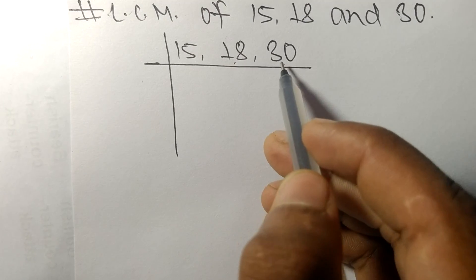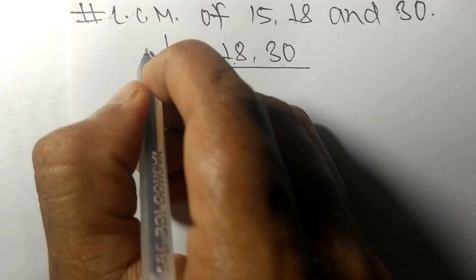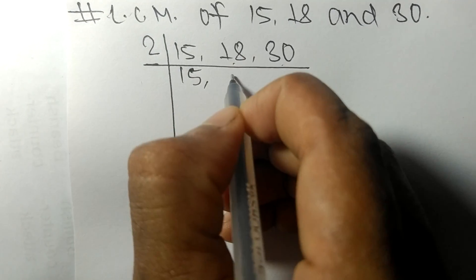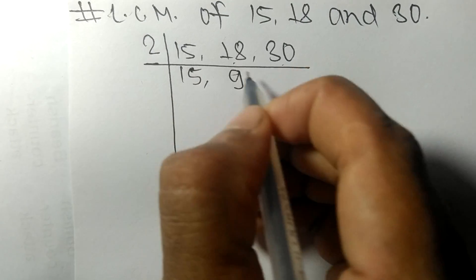18 and 30 are exactly divisible by 2. 15 is not divisible, so it remains the same. 2 times 9 means 18, 2 times 15 means 30.